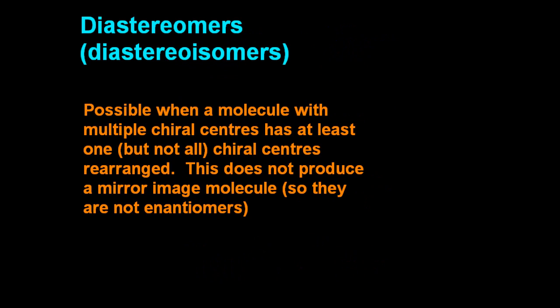So first, the definition. Diastereomers, or diastereoisomers, are possible when a molecule with multiple chiral centers has at least one but not all of the chiral centers rearranged. This does not produce a mirror image molecule, so they're not enantiomers.